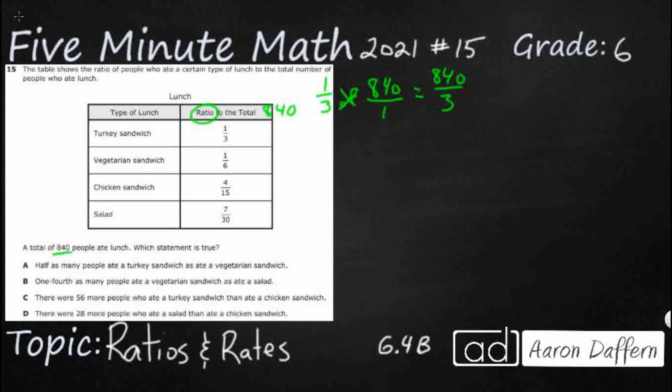So let's just divide this 3 into 840 and see what we get here. So 3 goes into 8 two times, that's going to be 6. Bring down one number, goes in there eight times, that's 24, and that's nothing, but we still need that 0, 280. So we have 280 people that want the turkey sandwich.